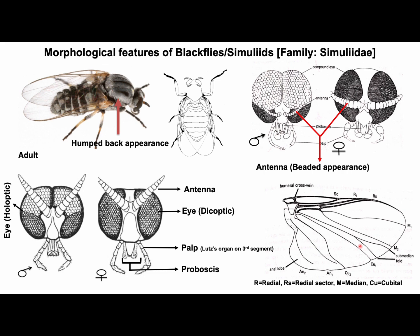The wings of black flies are colorless — that is transparent — around 1.5 to 6 millimeters in length. Each wing has a short, broad costal area. Radial, medial, and cubital veins are well developed. Radial sectors are unbranched or have two branches depending on species. One of the important characteristic features of the wings of black flies is the presence of a forked submedian fold, which is located between medial vein 2 and cubital vein 1.